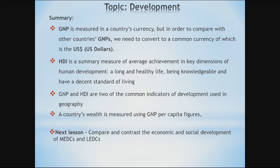So, what have we learnt today? Today's lesson, we have learnt that GNP is measured in a country's currency, but in order to compare with other countries' GNPs, we need to convert to a common currency — usually US dollars. HDI is a summary measure of average achievement in key dimensions of human development: a long and healthy life, being knowledgeable, and having a decent standard of living. GNP and HDI are two common indicators of development used in geography, and a country's wealth is measured using GNP per capita figures. Next lesson, we are going to compare and contrast the economic and social development of MEDCs and LEDCs.